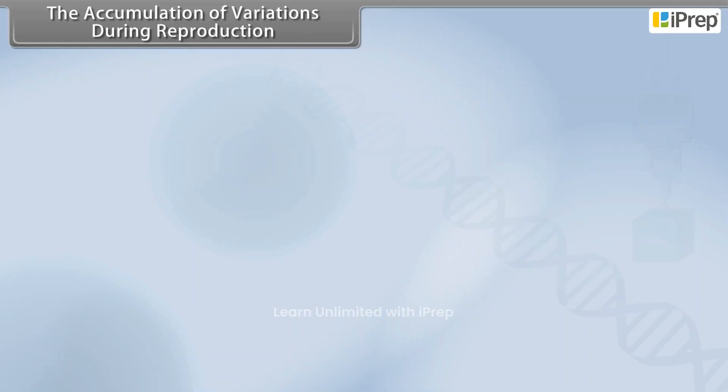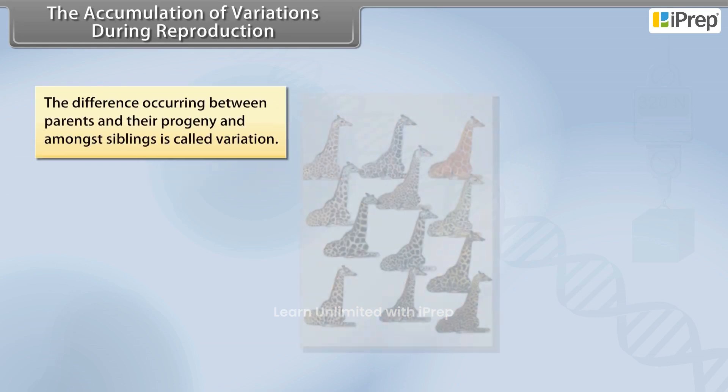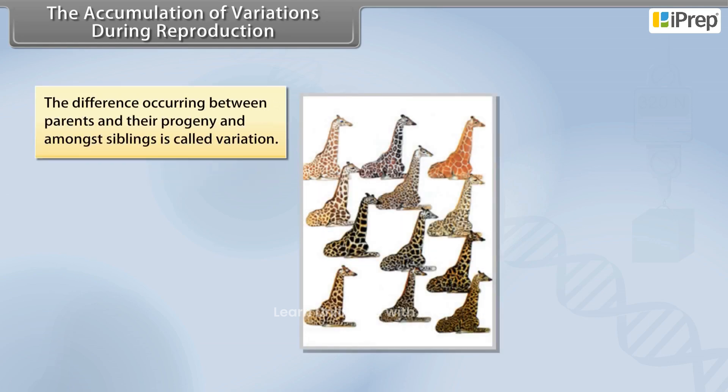The accumulation of variations during reproduction — the difference occurring between parents and their progeny and amongst siblings — is called variation.